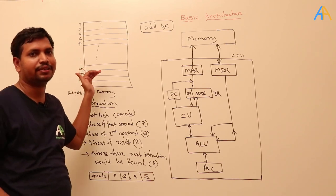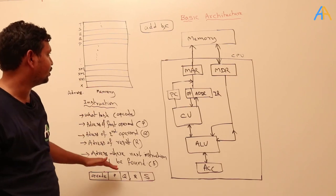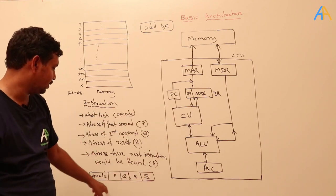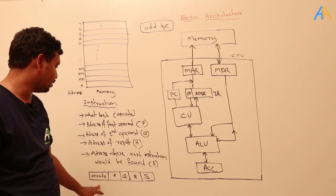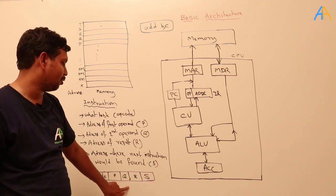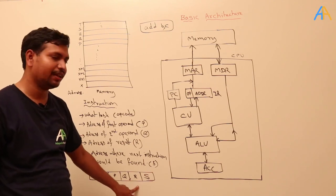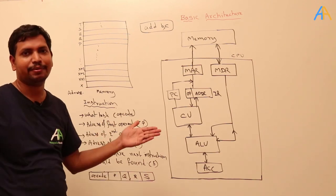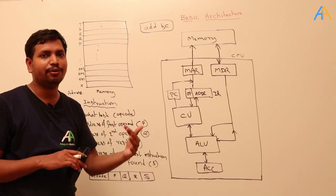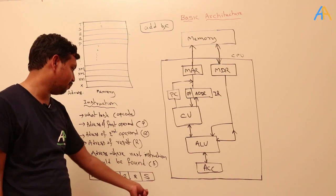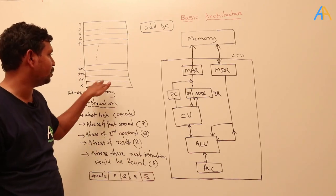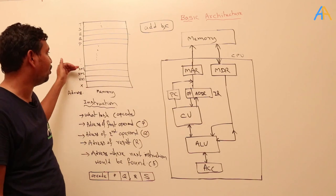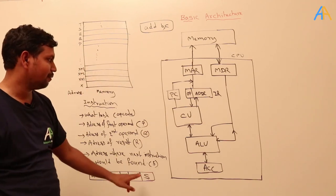After fetching the instruction, the instruction should contain which operation to perform. But if we include the next instruction address inside every instruction, the instruction length will be very large. So we use the program counter instead. We place a register — the program counter — which automatically increments every time and points to the next instruction to be fetched.